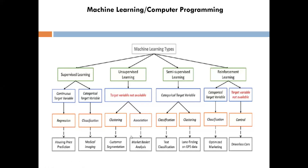Now let's look at different families of models. Starting with machine learning types — this will give you a lot of clarity. There are generally three or four main types: supervised learning, unsupervised learning, semi-supervised learning, and reinforcement learning. These are the four main types of machine learning.